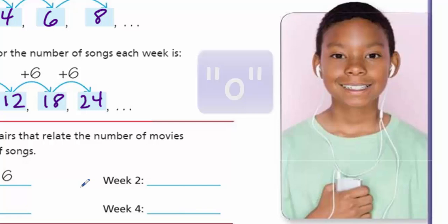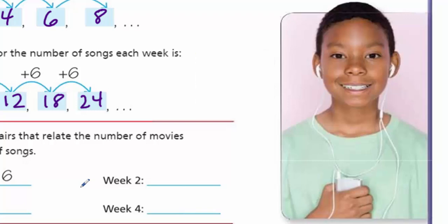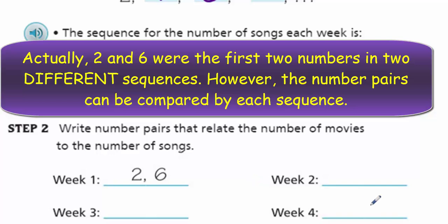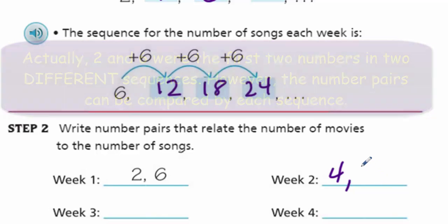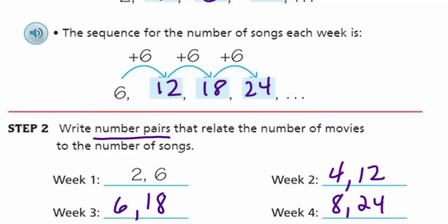Step two says: write number pairs that relate the number of movies to the number of songs. Week one is (2, 6) — those are the first two numbers in that sequence. Week two would be (4, 12), week three would be (6, 18), and week four — the last two numbers — (8, 24). We call them number pairs.